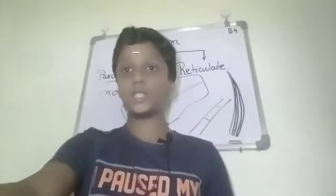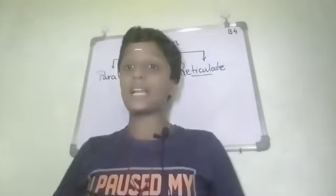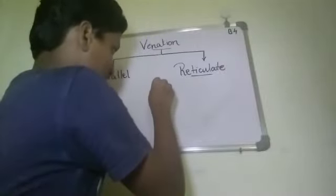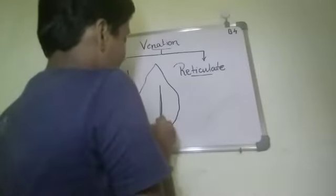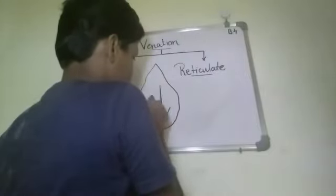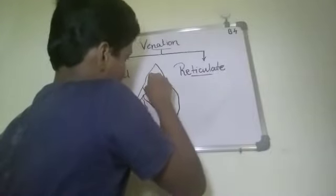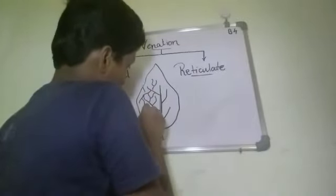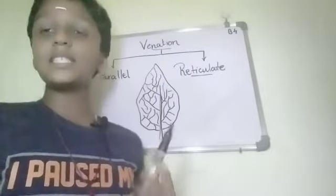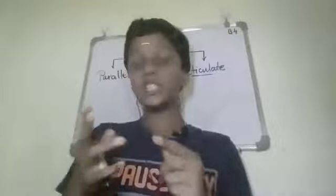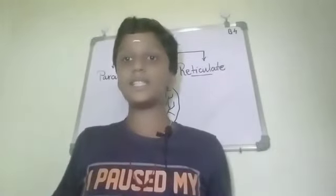Now let us look into reticulate venation. When the leaf has a network of veins and veinlets, we say that the leaf is reticulate. For example, if you take the peepal leaf, it has a midrib, there will be side veins, and from these veins other veins arise, forming a network. So this is reticulate venation. In parallel venation the veins run parallel to each other, while in reticulate venation the veins form a huge network of veins and veinlets.